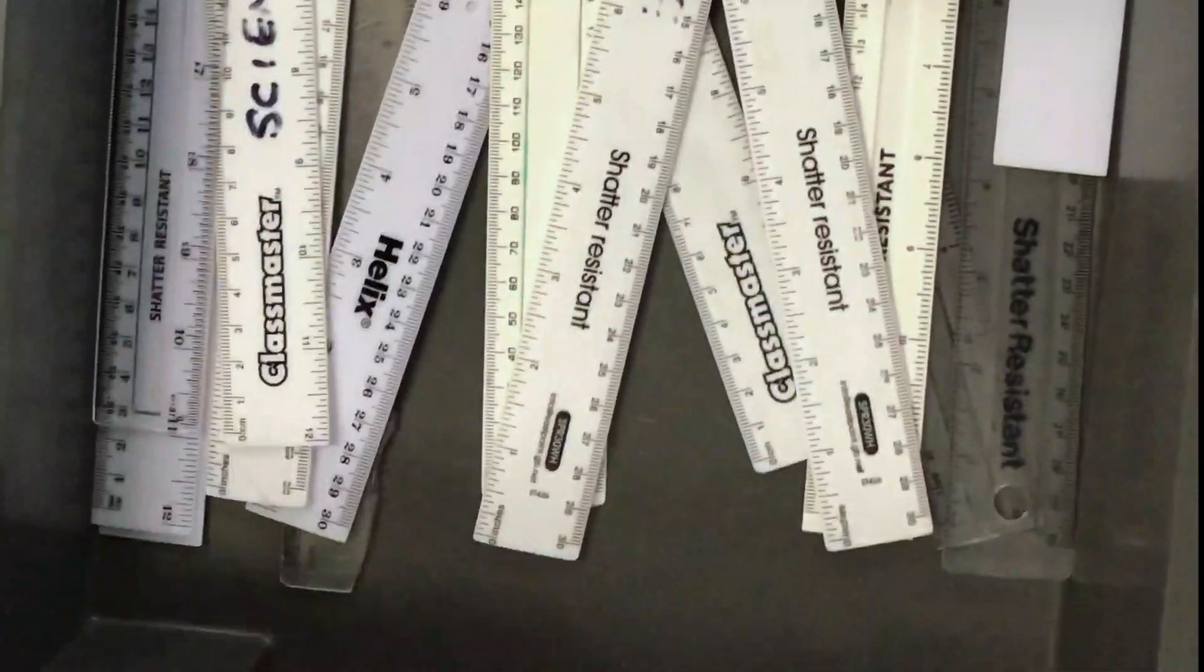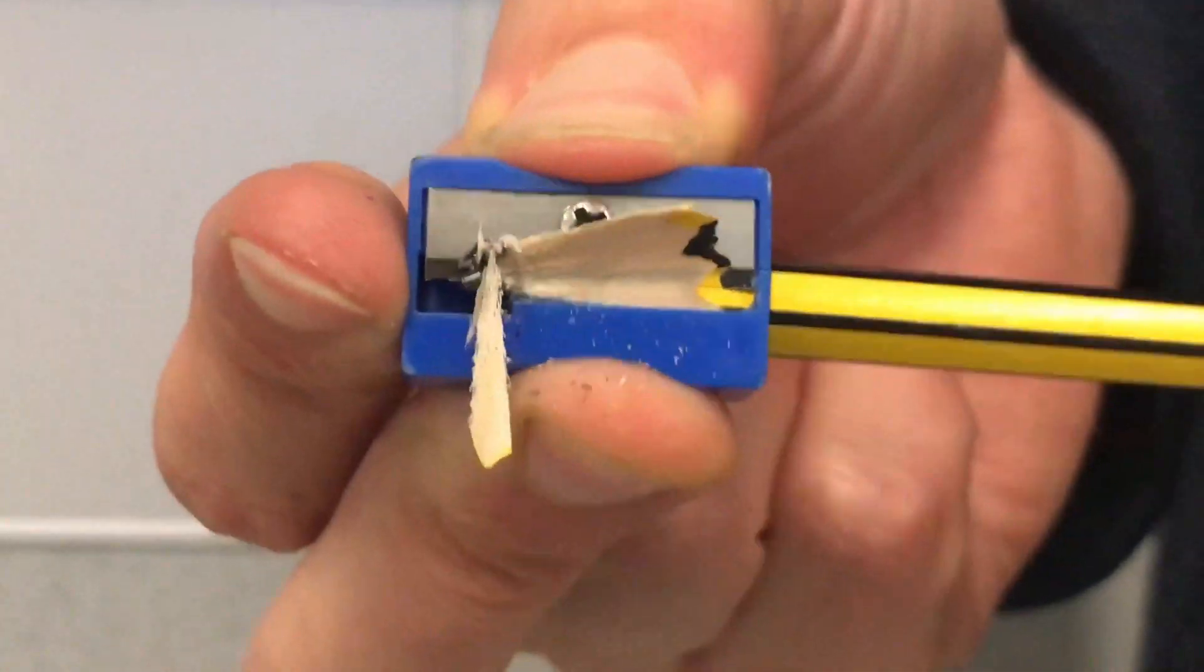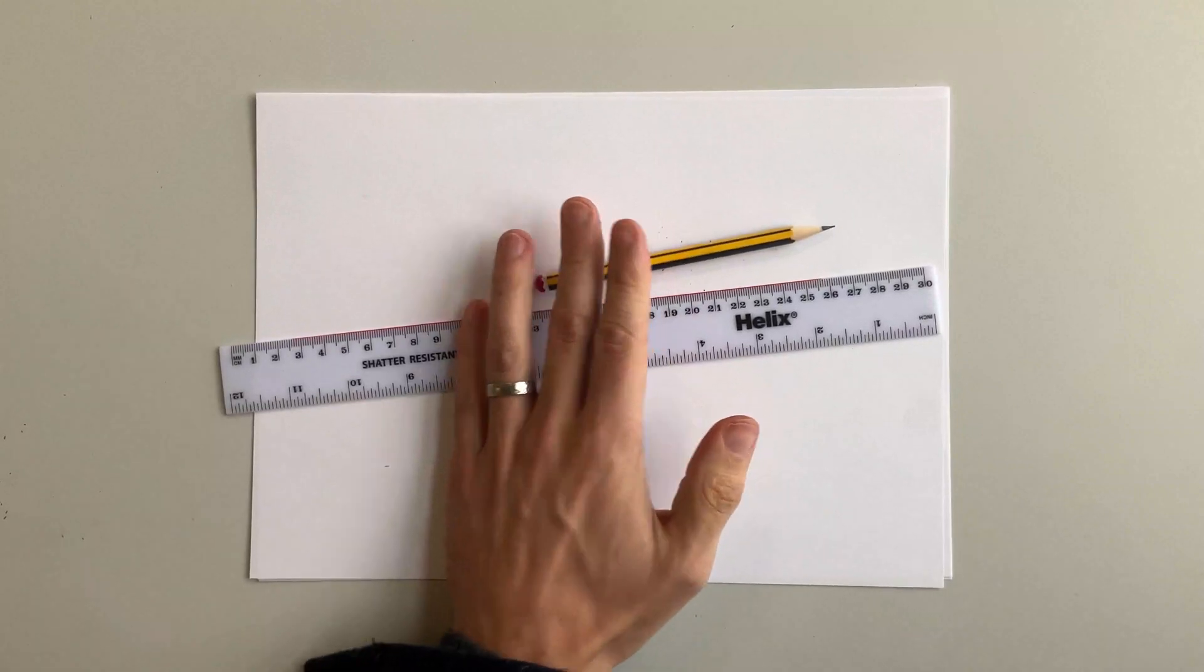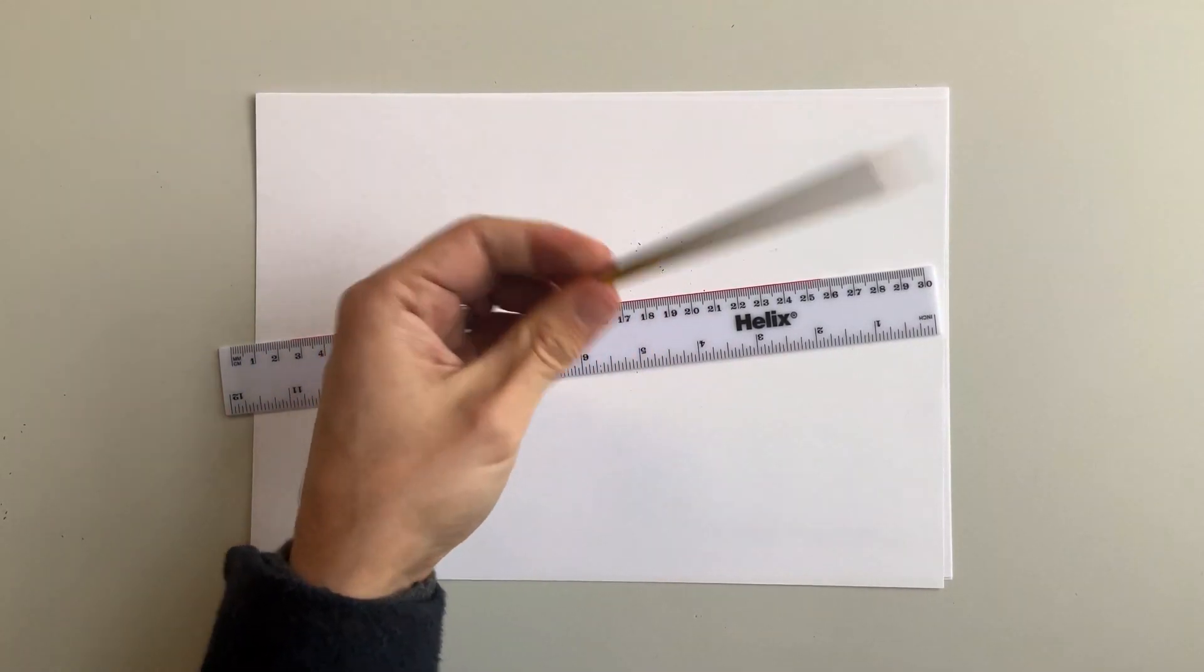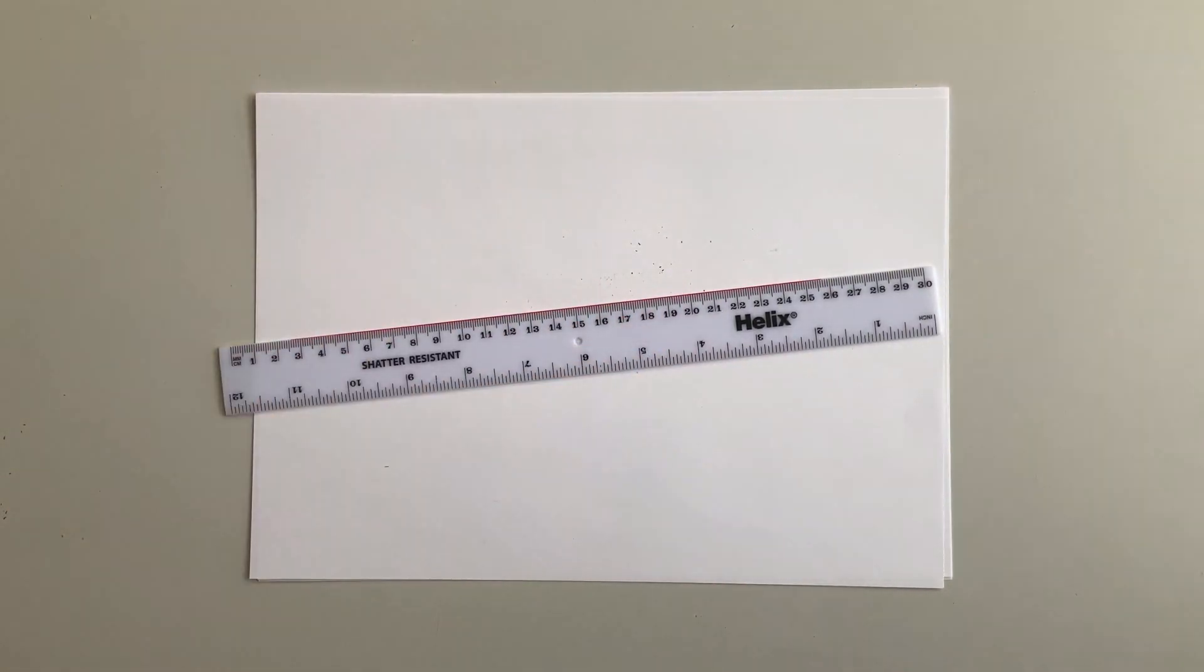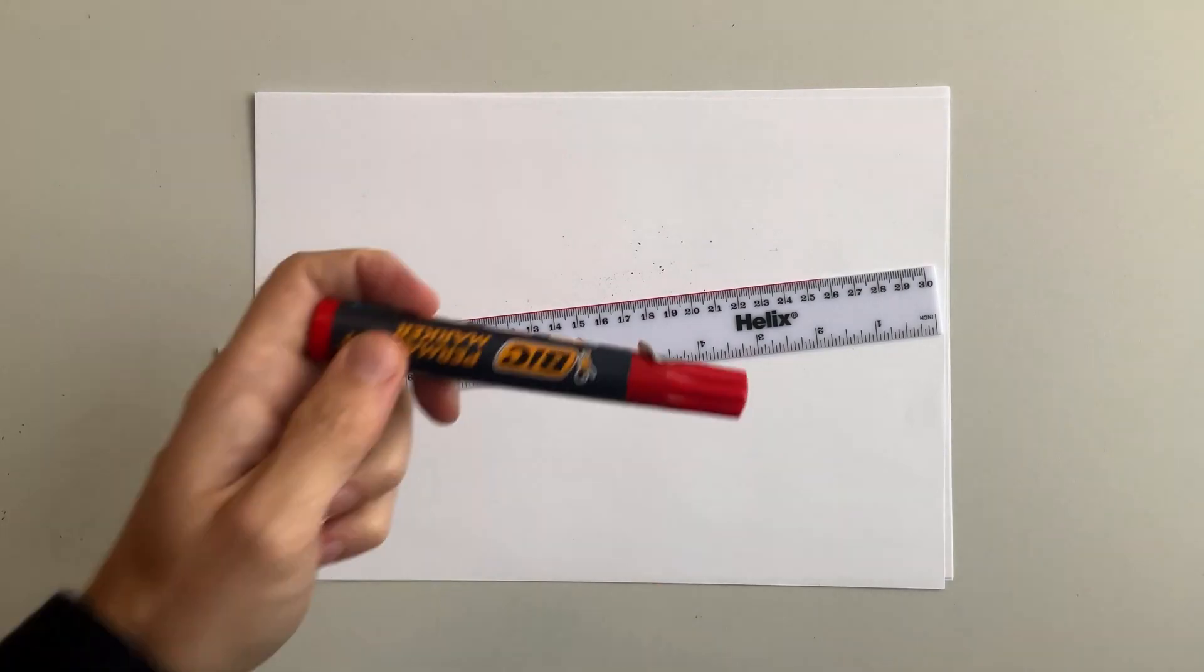To start with, you're going to need a ruler, a sharp pencil, and something to draw on. Sadly, pencils don't show up very well on camera, so I'm swapping mine for this big fat marker pen.